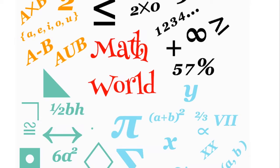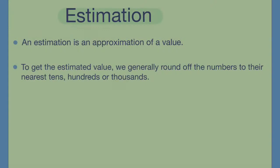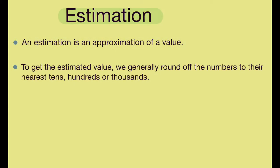Welcome to Math World. Today's topic: Estimation of Numbers by Rounding off to the nearest tens, hundreds and thousands. An estimation is an approximation of a value. To get the estimated value, we generally round off the numbers to their nearest tens, hundreds or thousands.